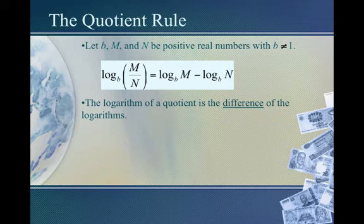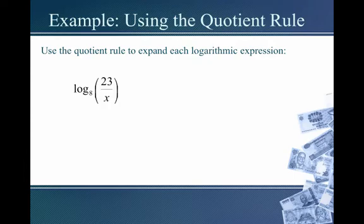The key is that on the left-hand side there is one logarithm base b. For example, log base 8 of 23 divided by x — according to our quotient rule, we're going to get the difference of two logs: log base 8 of 23 minus log base 8 of x.